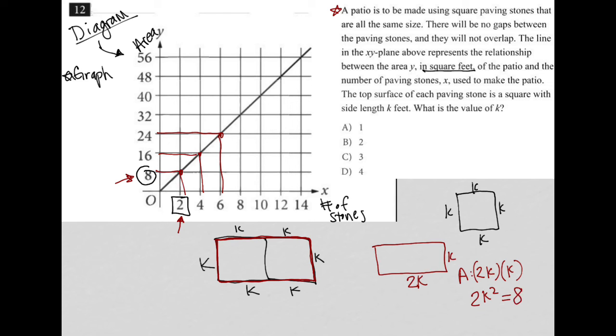When you have two stones together, it's an area of eight. I can then divide both sides by two, leaving me with k squared equals four.